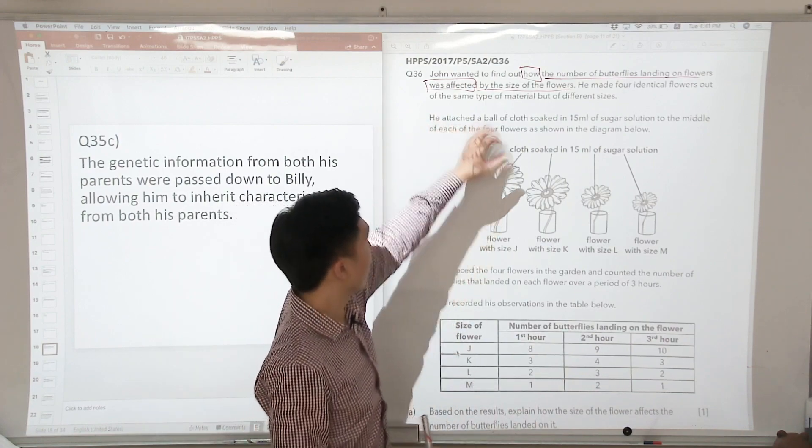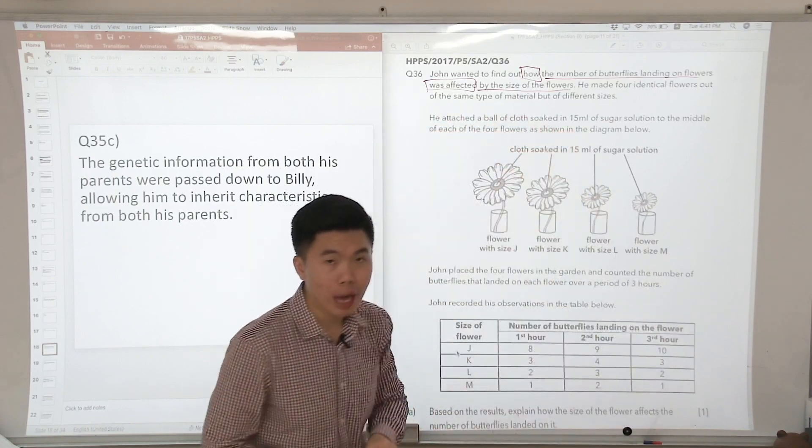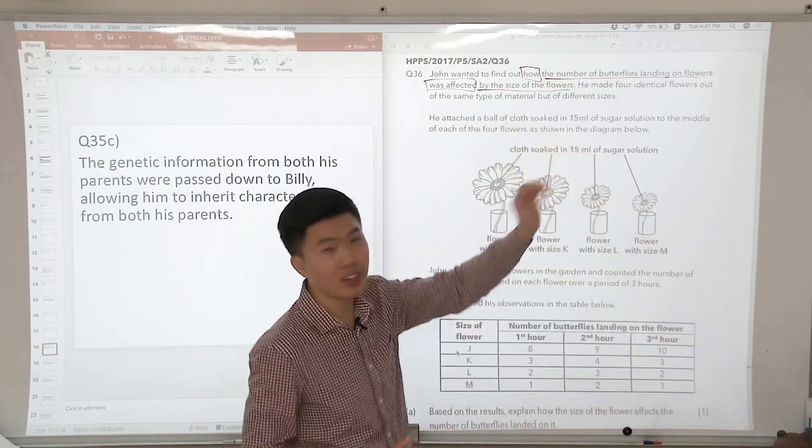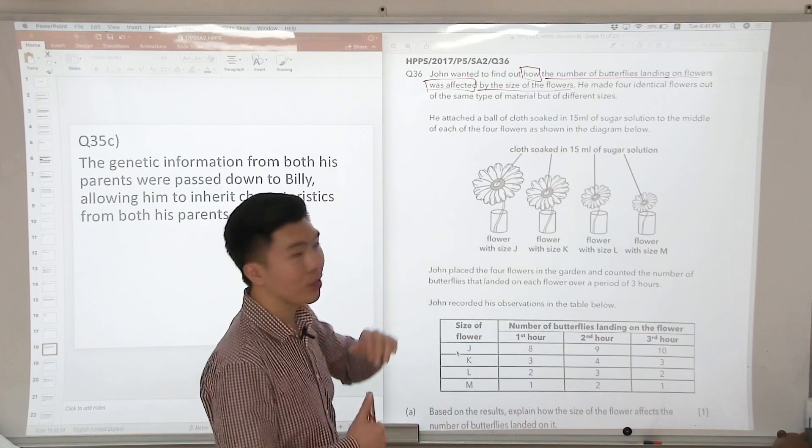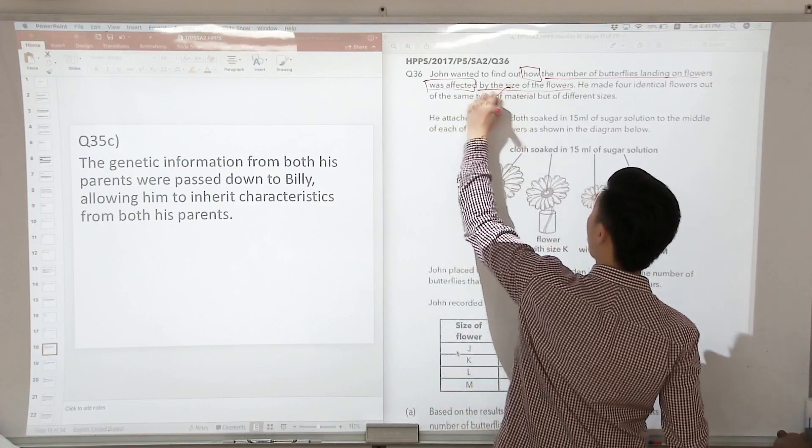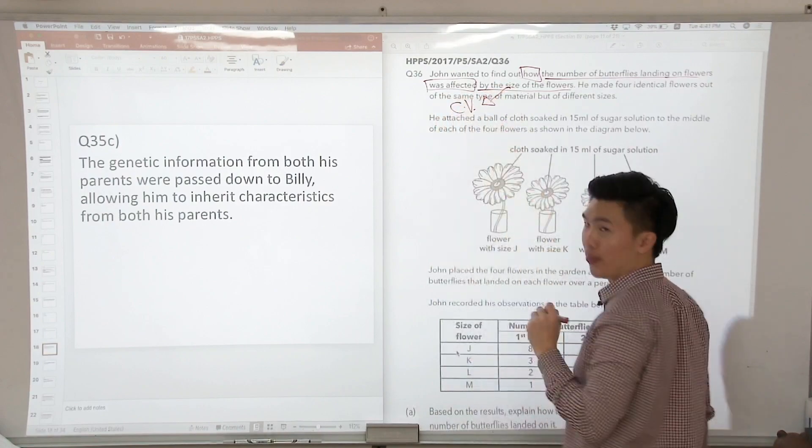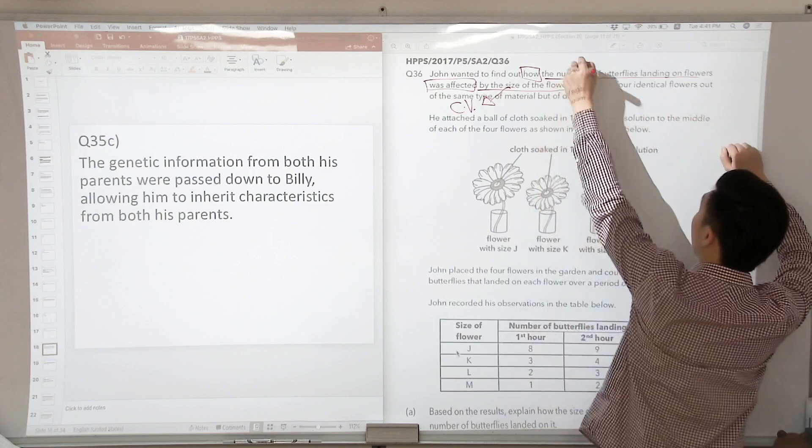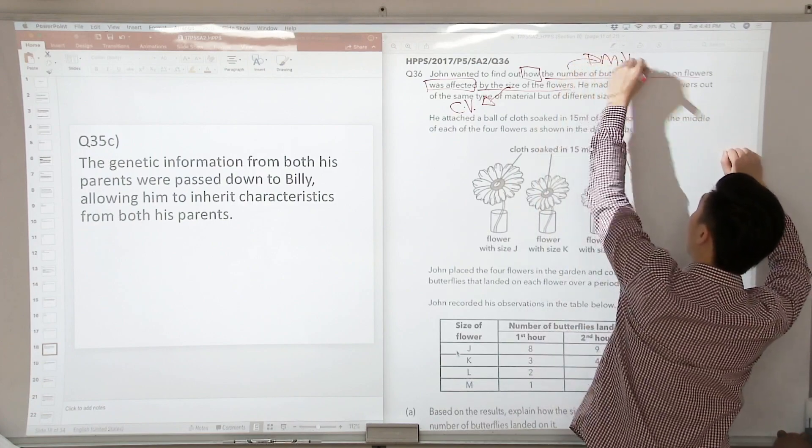Is the size affecting the number of butterflies landing on the flowers, or is the number of butterflies landing on the flowers affecting the size of the flowers? Do you get this right? The size of the flowers is the change variable, and the number of butterflies landing on the flowers is the measured variable.